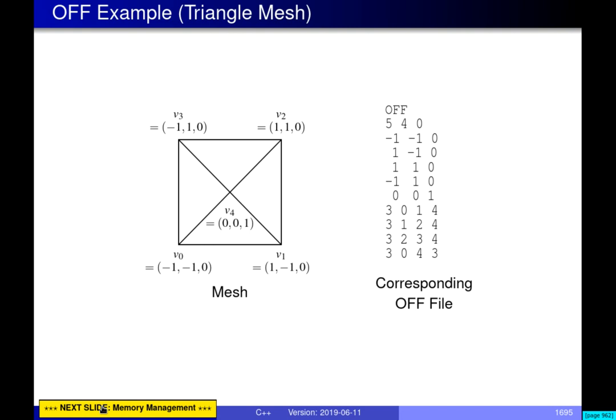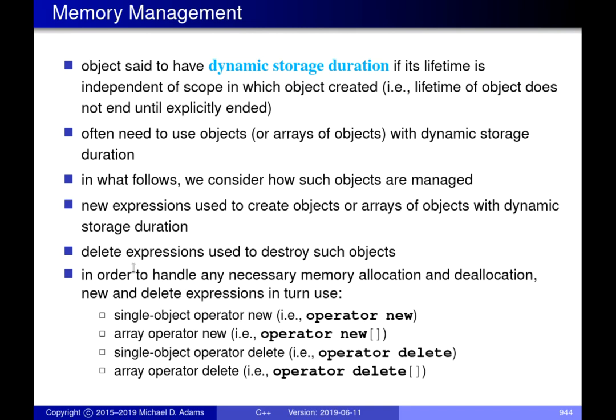We are now moving into the memory management section. When talking about memory management here, we mean objects with dynamic storage duration — objects whose lifetime starts when we explicitly create them using a new expression and continues until we explicitly destroy them using a delete expression. New and delete are the basic mechanisms for dynamic allocation in C++.